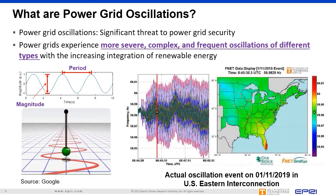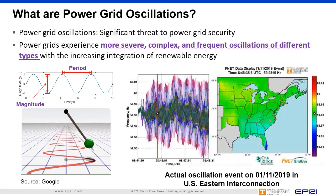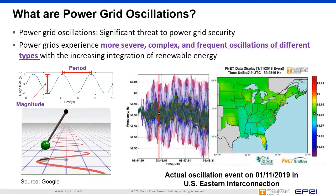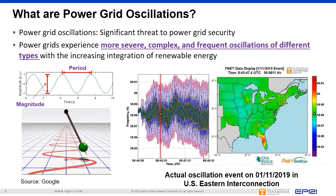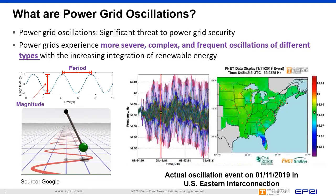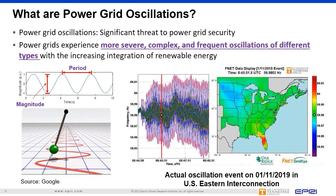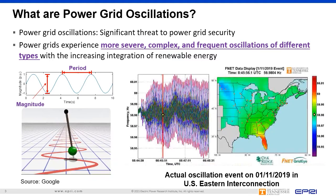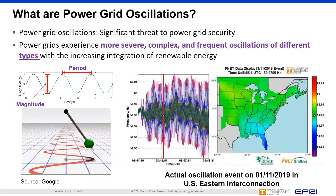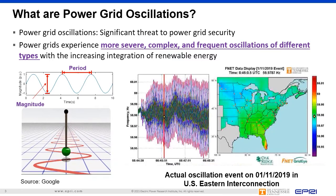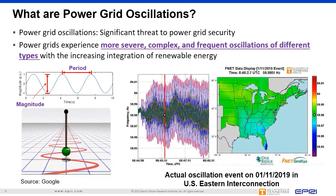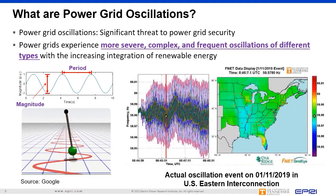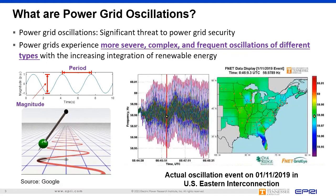For example, the video on the right shows a severe oscillation event that happened on January 11, 2019 in the U.S. Eastern Interconnection. Effective suppression of these oscillations is essential to maintain a secure and reliable operation of the power grids.